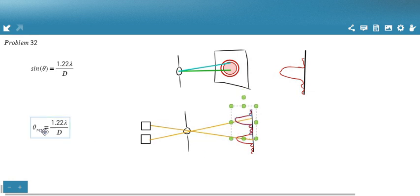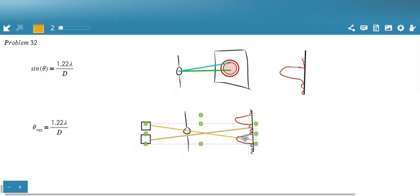And at that angle, theta res, you should be able to distinguish the two objects. However, if you go lower than theta res, what happens with the two images, they begin to overlap.